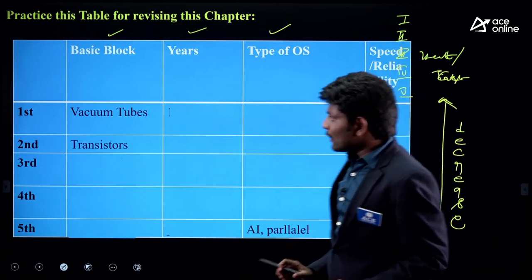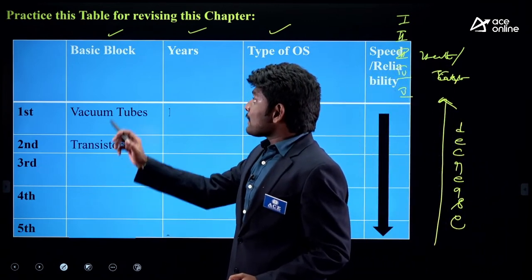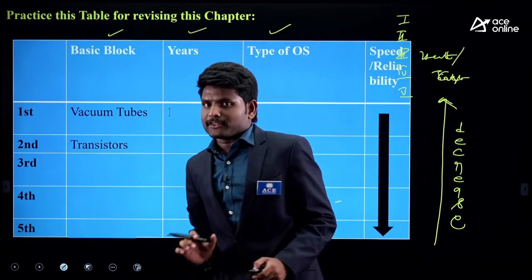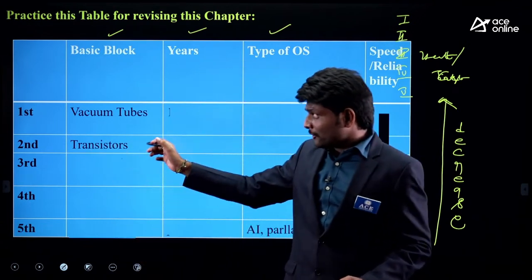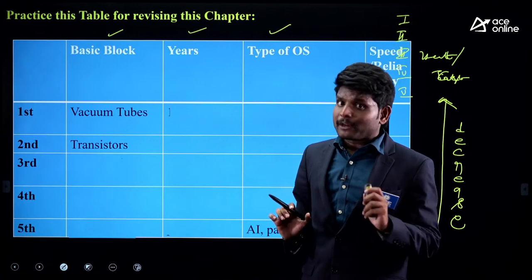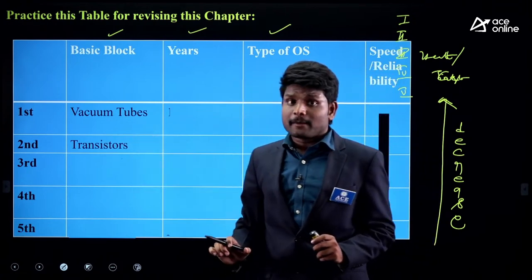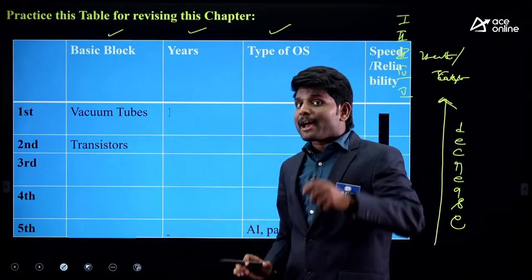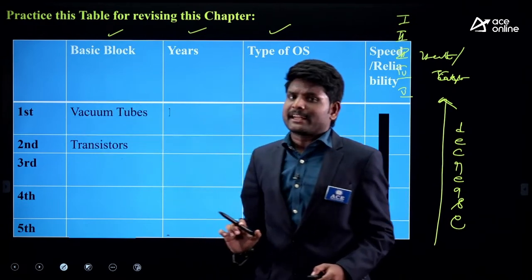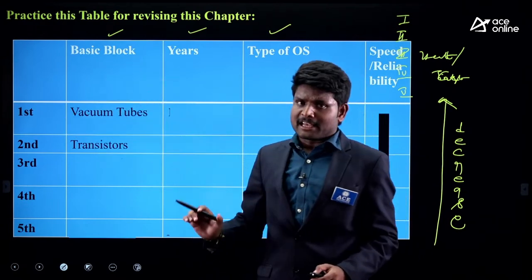Next question: 'What is the basic block of second generation computer?' The answer is transistors. This question was asked in a previous year also. They asked about transistors this year, but next year they may ask about basic blocks of first generation — so we have practiced that as well.